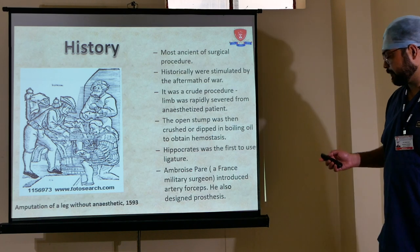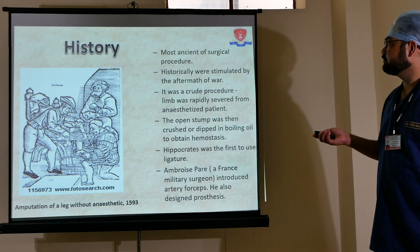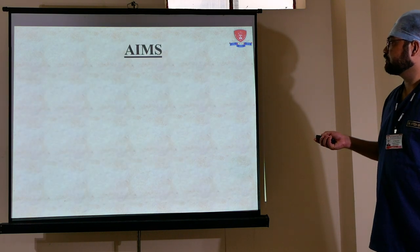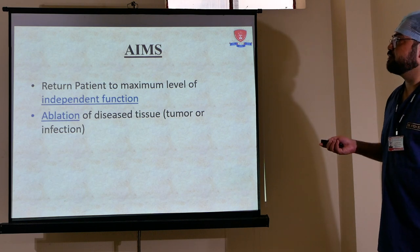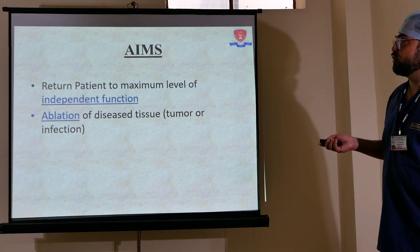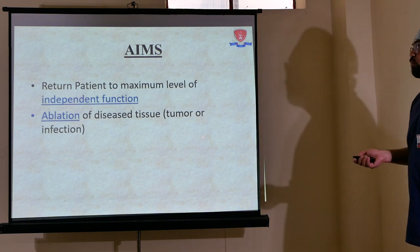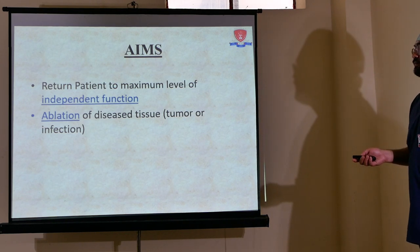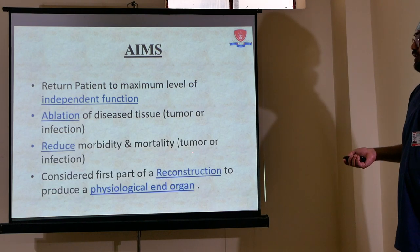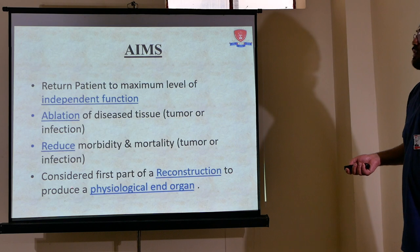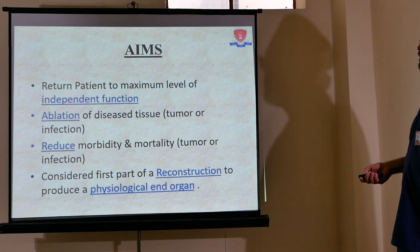The aims of amputation are: first, to return the patient to a maximum level of independent function; ablation of diseased tissue, tumor, or infection; and to reduce morbidity or mortality caused by tumor or infection, considered as the first part of reconstruction to produce a physiological end organ.